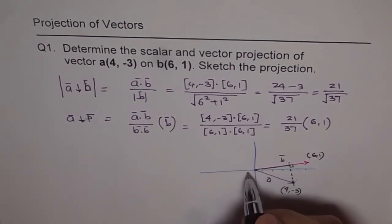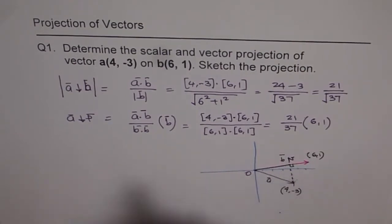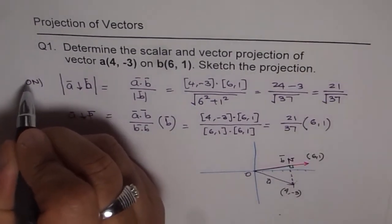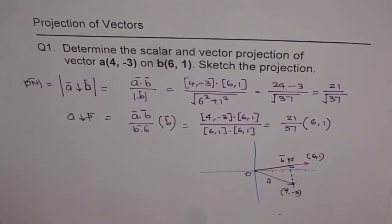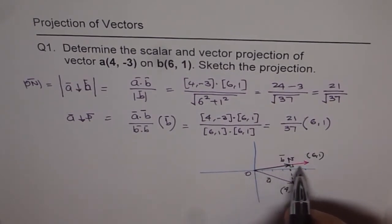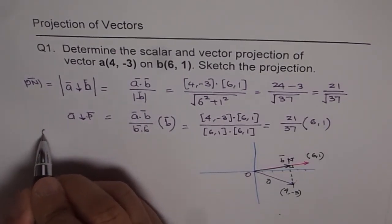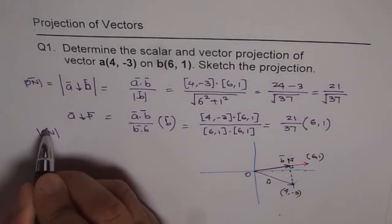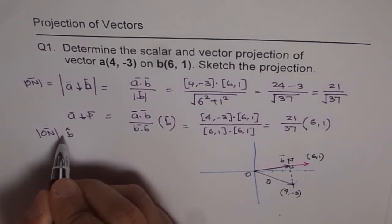Then this vector from here to here is the scalar projection. So let me write down this as ON. So ON, the magnitude ON is actually the scalar projection. And if I give it a direction like this, which is along the direction of B, then it becomes a vector projection. What I am trying to highlight here is ON, but in the direction of unit vector B.